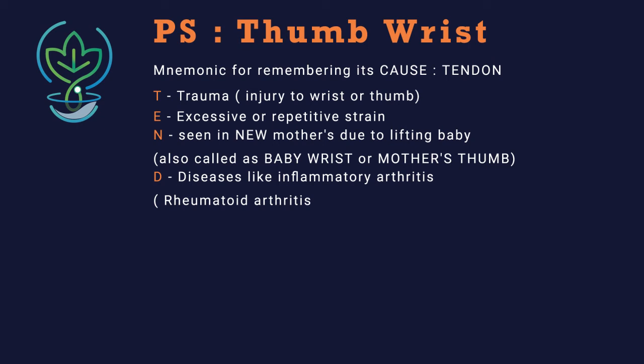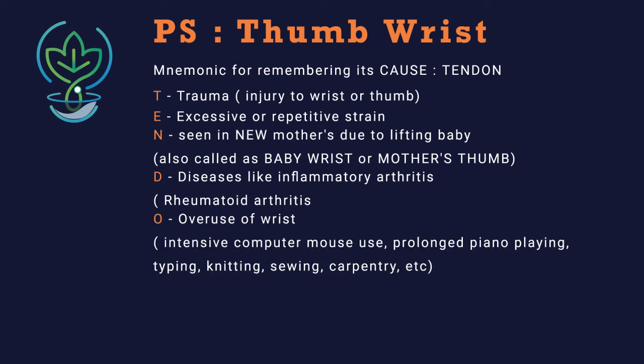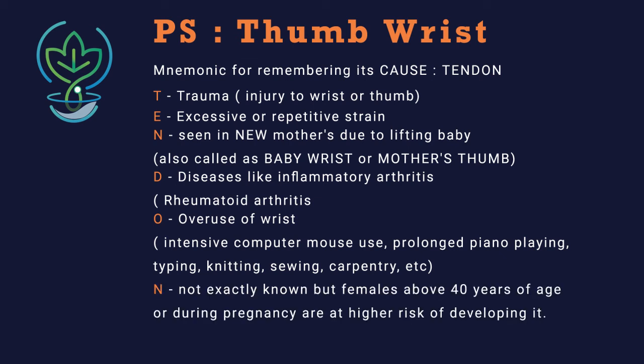O stands for overuse of the wrist, such as intensive computer mouse use, prolonged piano playing, typing, knitting, sewing, carpentry, etc. — wherever the wrist is overused. N stands for the cause which is not exactly known, but females above 40 years of age or during pregnancy are at higher risk of developing it.